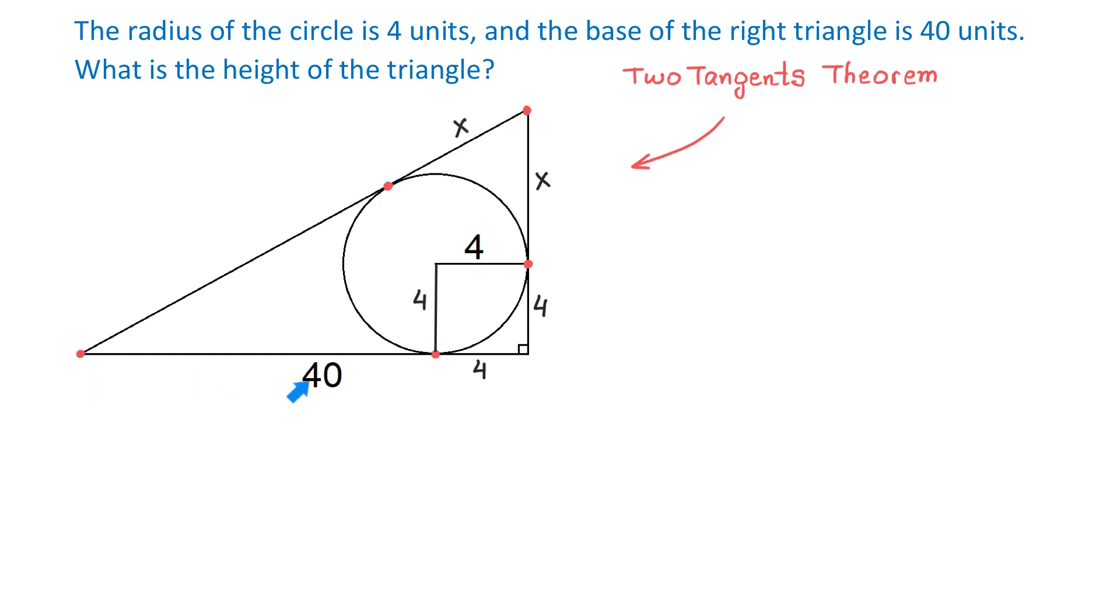Now let's take a look at the base of the triangle. If the total length is 40 units and this part is 4 units, then this part will be 36 units. Now let's apply the two-tangents theorem one more time. So here we have a point outside of the circle and two tangent segments to this circle. Then, if this segment is 36 units, then this one is also 36 units.